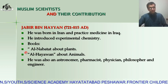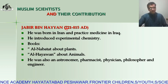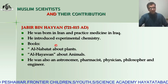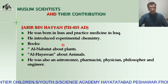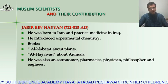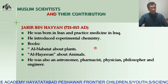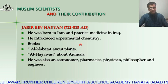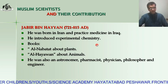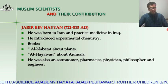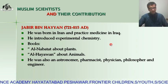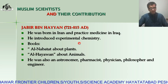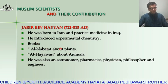The first one is Jabir ibn Hayyan, from 721 to 815 AD. He was born in Iran. For the first time, he introduced experimental chemistry. Before Jabir ibn Hayyan, chemistry was just limited to observation, but he introduced experimental chemistry.